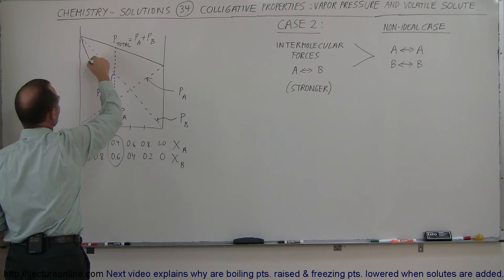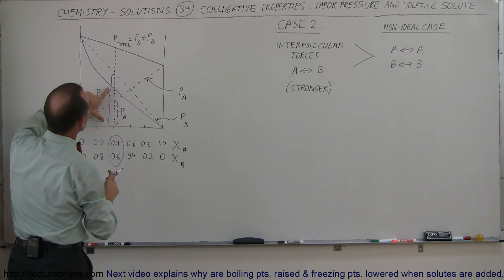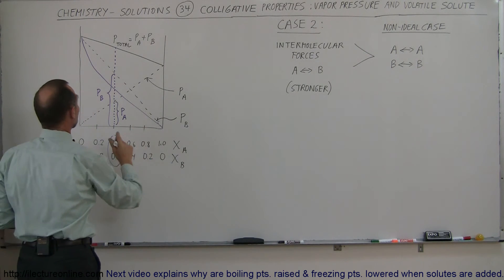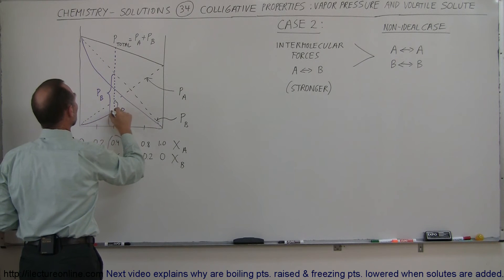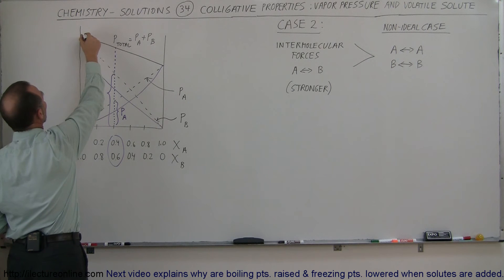And what you end up then is you end up with a vapor pressure curve that looks like this, depressed like that. So at any given time there's actually less vapor pressure because you brought the two components together for the vapor pressure of B, and the same will happen to the vapor pressure of A like that.